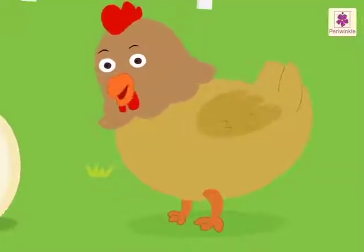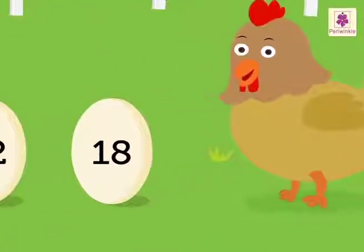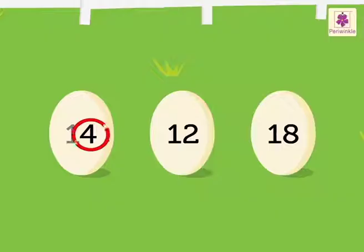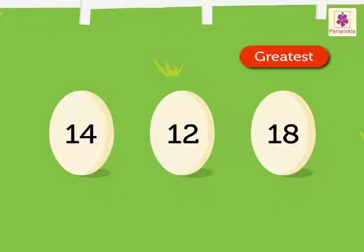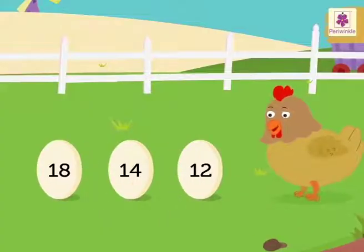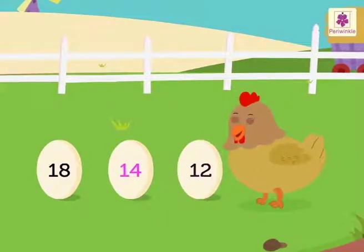Look at Daisy. She has got three new numbers to arrange in descending order. They are 14, 12, 18. Let's compare the ones as each number has one ten. Here there are four ones in 14, two ones in 12, and eight ones in 18. The greatest is 18 and smallest is 12. Hence, the descending order is 18, 14, 12.